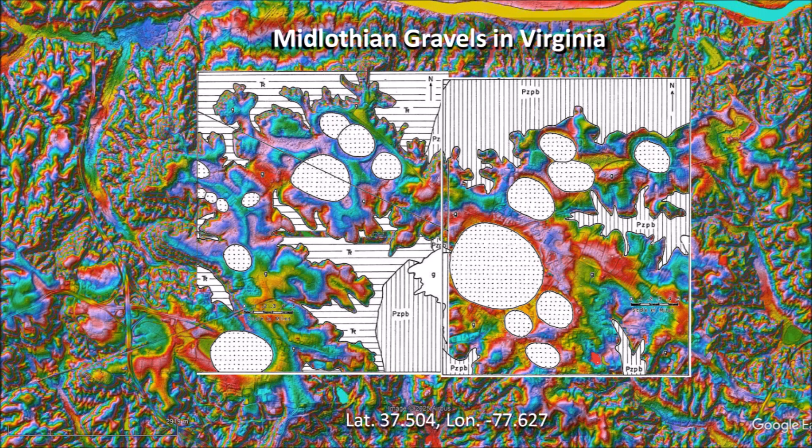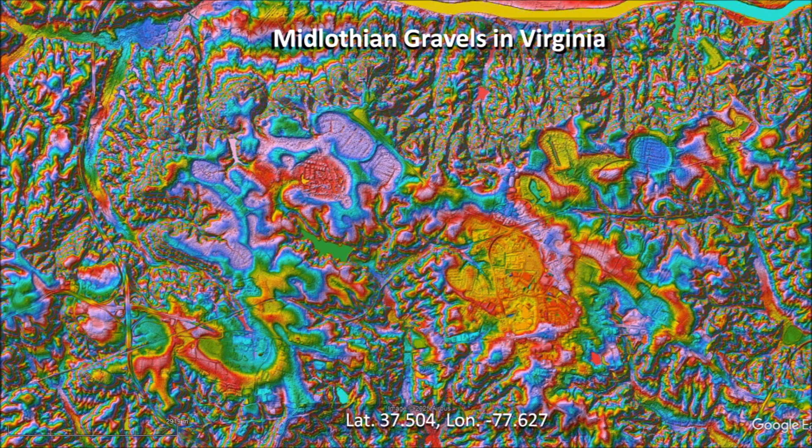This image shows the maps provided by Goodwin and Johnson as an overlay on a LiDAR image of the area. The features are fairly accurate. This is a LiDAR image of the same area showing the Carolina Bays in very rough terrain, which is not typical of the flat terrain where the Carolina Bays are normally found.